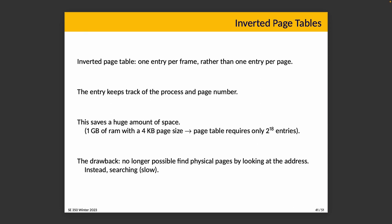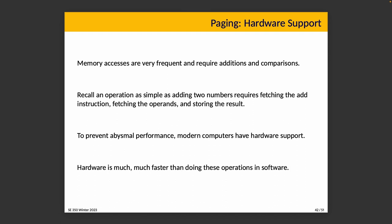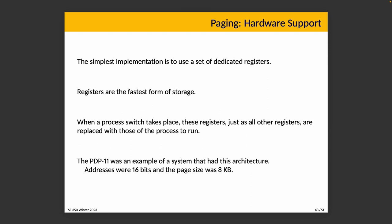The major drawback of the inverted page table is that finding a physical frame location requires searching the table rather than direct lookup, and the table can be large, making searches slow. Memory addresses are very frequent, so we need hardware help. The simplest hardware implementation uses dedicated registers — the fastest form of storage. When a process switch occurs, we swap the registers corresponding to lookups with those for the new process. The PDP-11 used this approach with 16-bit addresses and 8 kilobyte pages, giving only 8 page table entries.